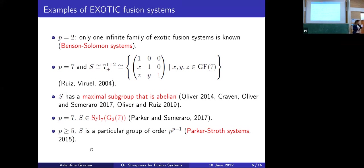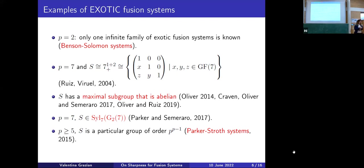So these are the largest known classes containing exotic fusion systems: the Benson-Solomon systems for p=2; systems on p-groups having a maximal abelian subgroup; the Sylow 7-subgroup of G2(7); and the Parker-Stroth systems. I'd like you to remember these because they will be important toward the end of the talk. That's about it for the introduction to fusion systems — now let's try to understand what the word 'sharpness' means.